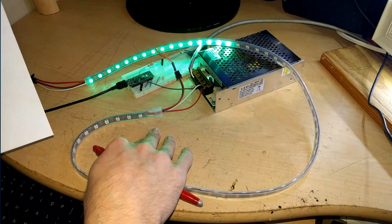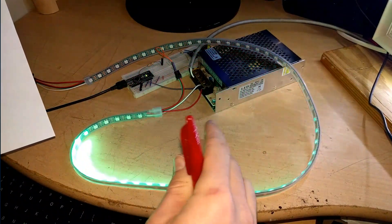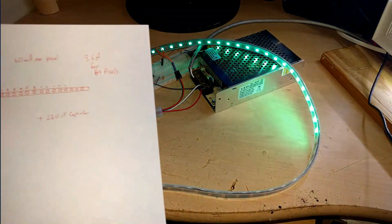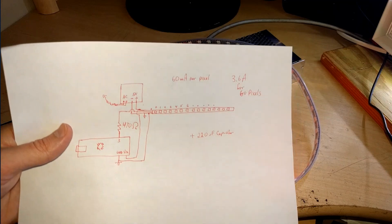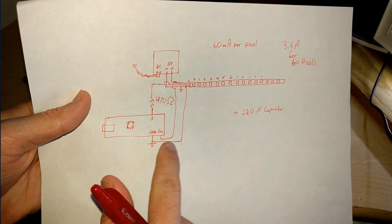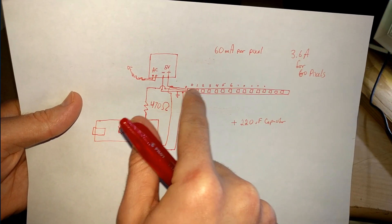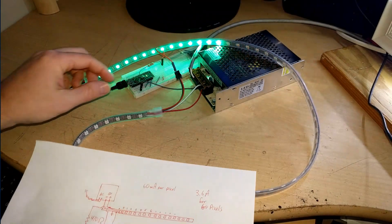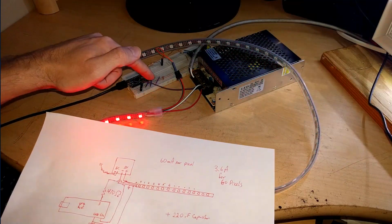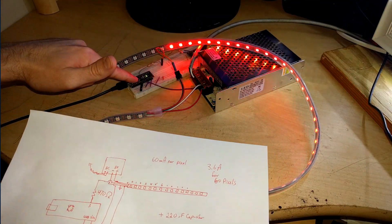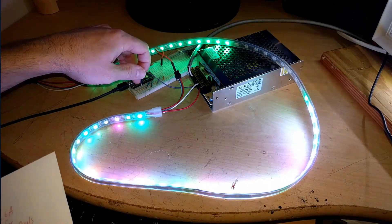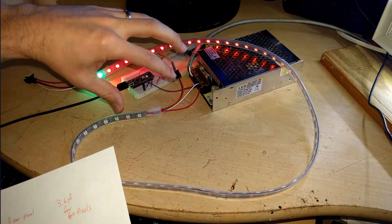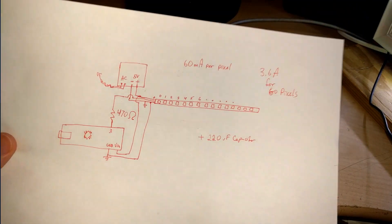They recommend using a 220 microfarad capacitor connected between the positive and negative of the LED strip's power input. I don't have one connected because my power supply is more than able to provide enough current. Also very important: the ground from the Arduino has to be connected with the ground of the LED strip, because bad things happen otherwise — the LED strip goes wild if that ground is disconnected.